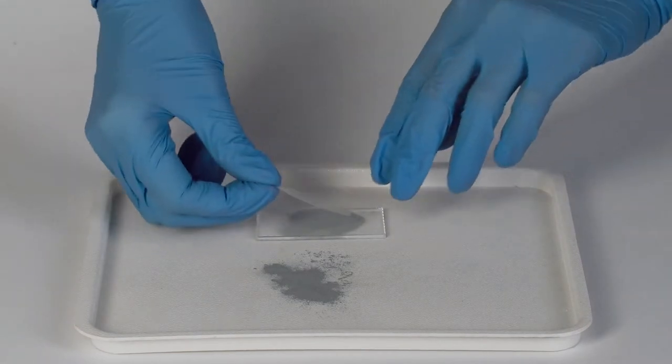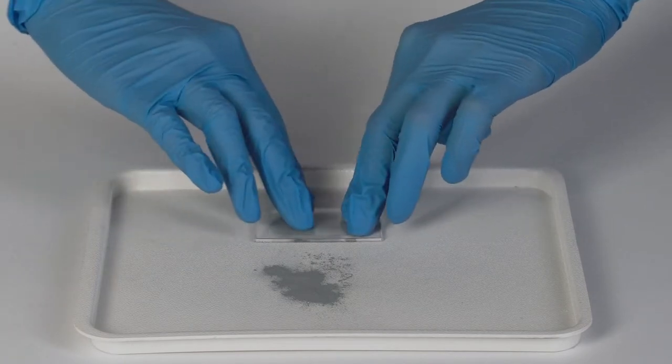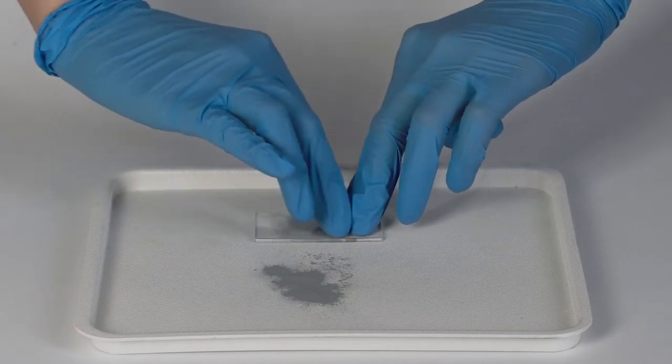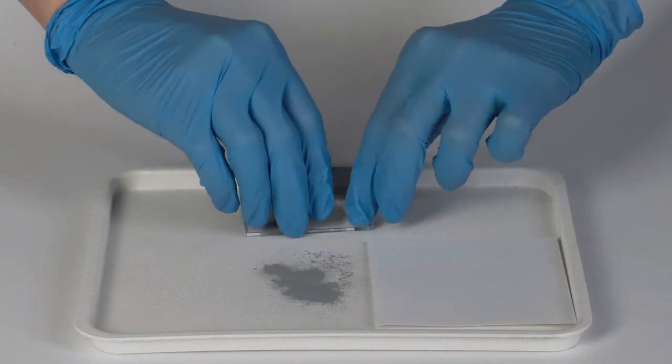Turn the glass slide over again and place a piece of adhesive tape over the fingerprint. Carefully pull off the tape and stick it onto a sheet of white paper.